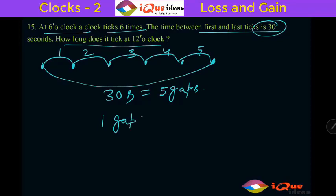So here 1 gap is equal to 30 by 5 that is 6 seconds.